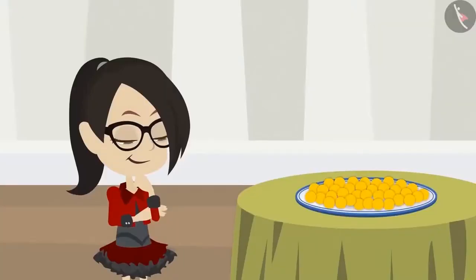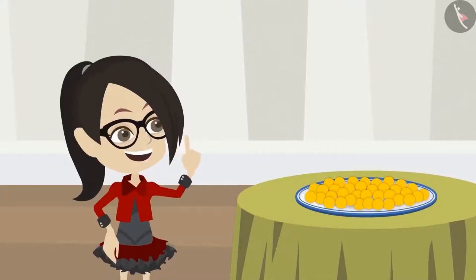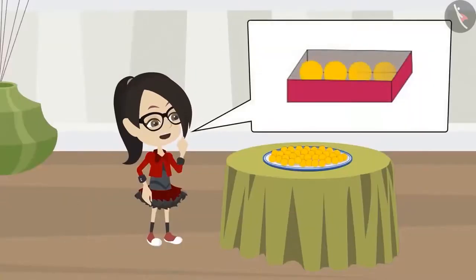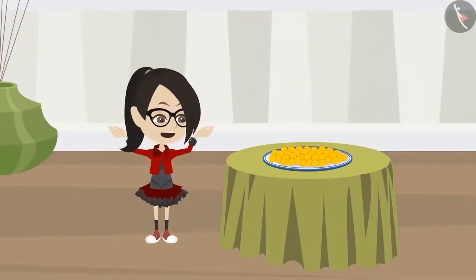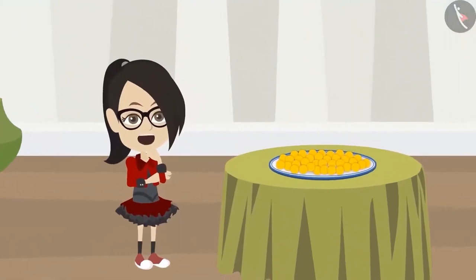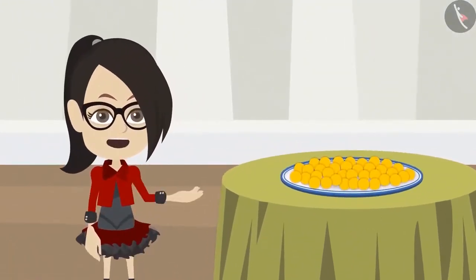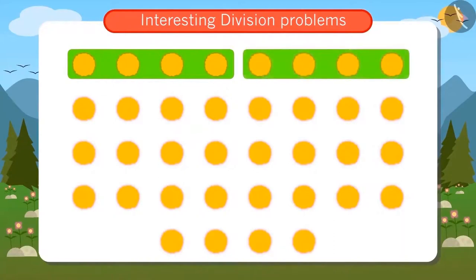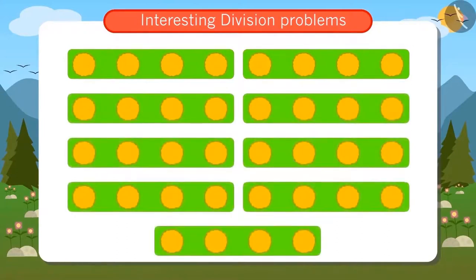Vandana looks at the ladoos and comes up with an idea. I know that four ladoos will come in a box, so I will try to make groups of four ladoos. The more groups I make, the more boxes I have to bring from the market. I put these four ladoos in a group, then four more in the next group. In the same way, I make groups of four from the remaining ladoos. Now I count these groups — there are nine total groups. That means I have to buy nine boxes.